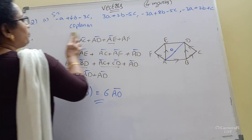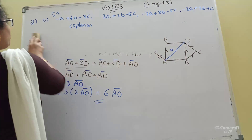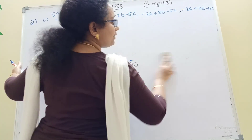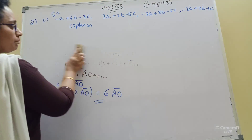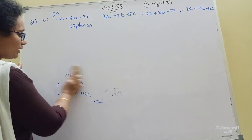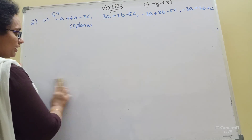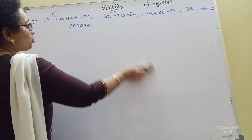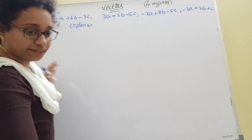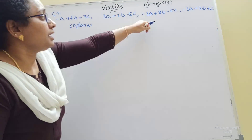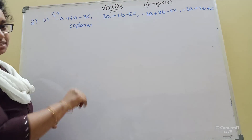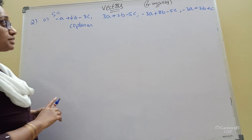Now let's prove. We have 4 points. If we have the 4 points, then we have 3 lines. Then we have 4 vectors.